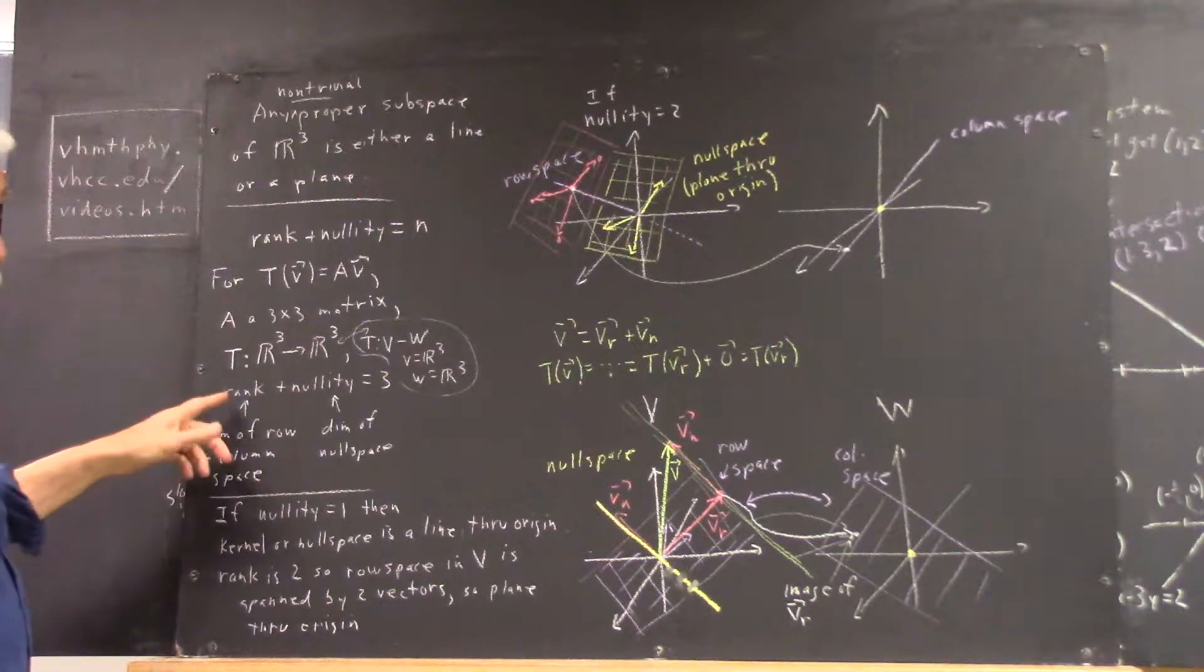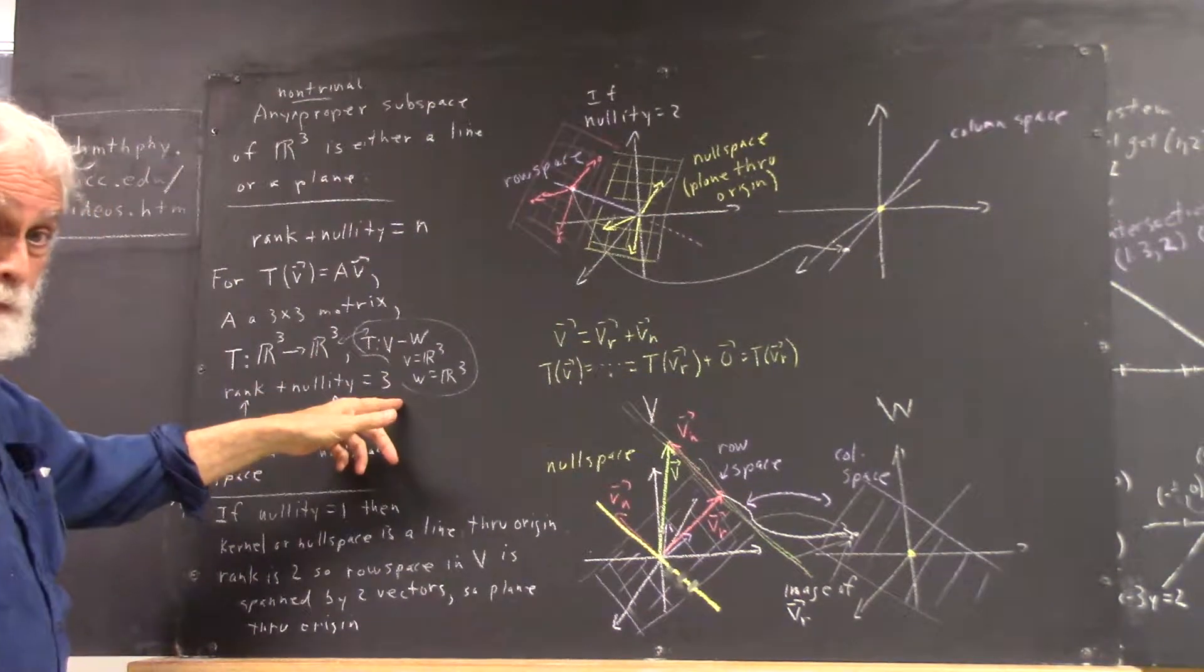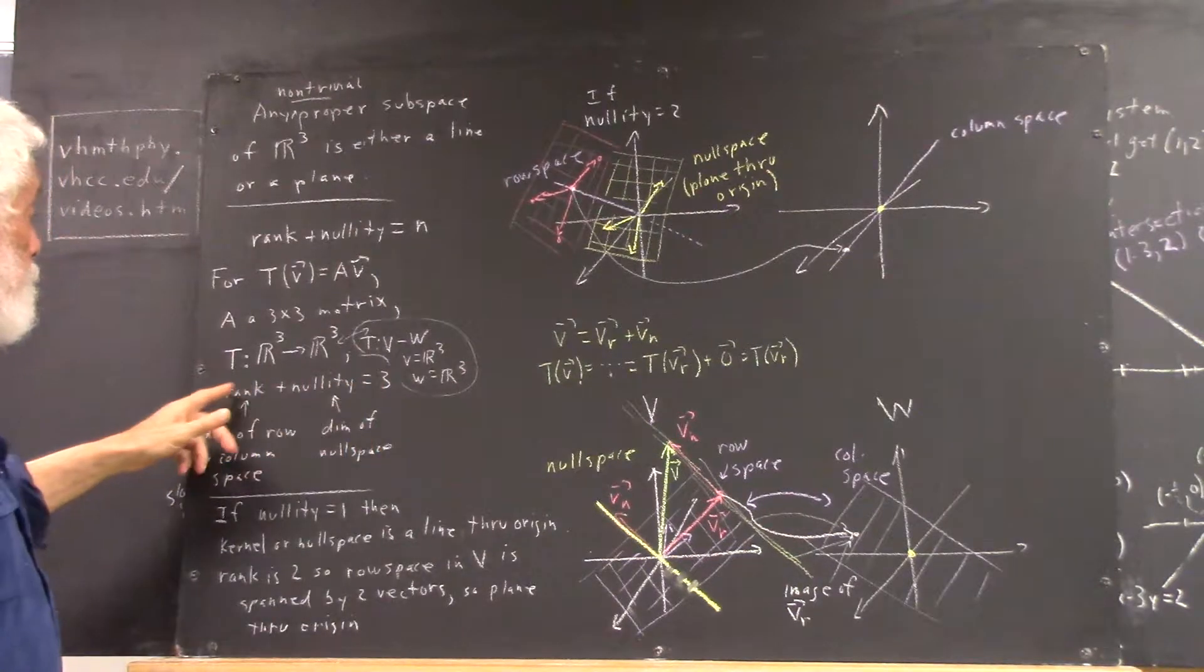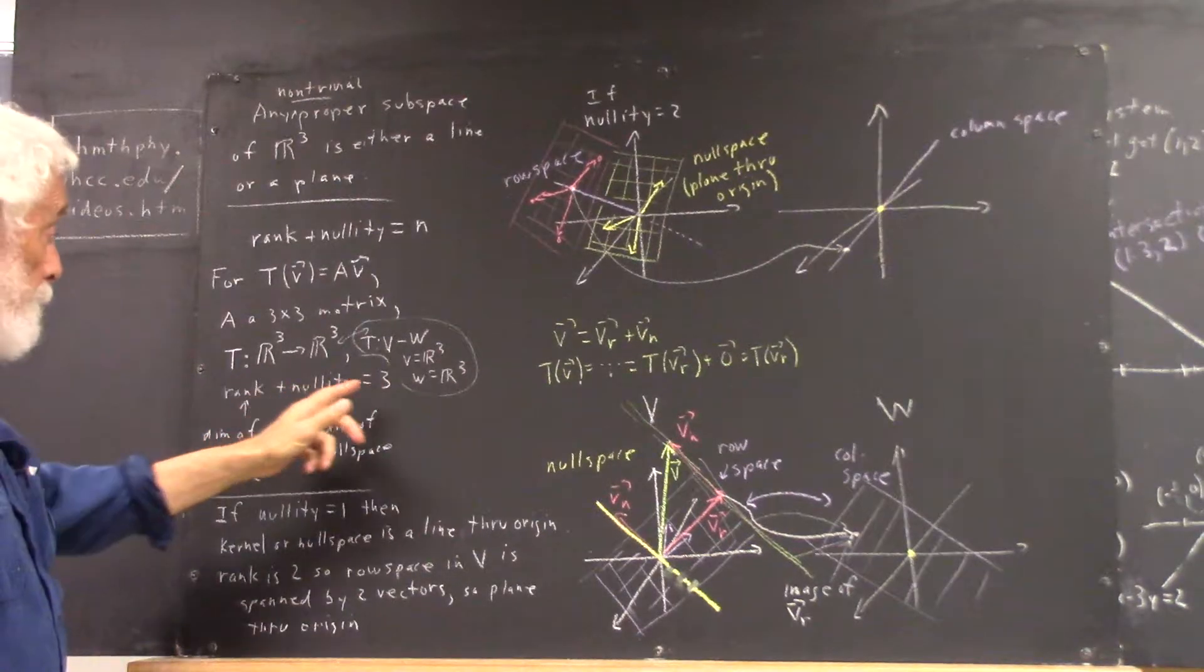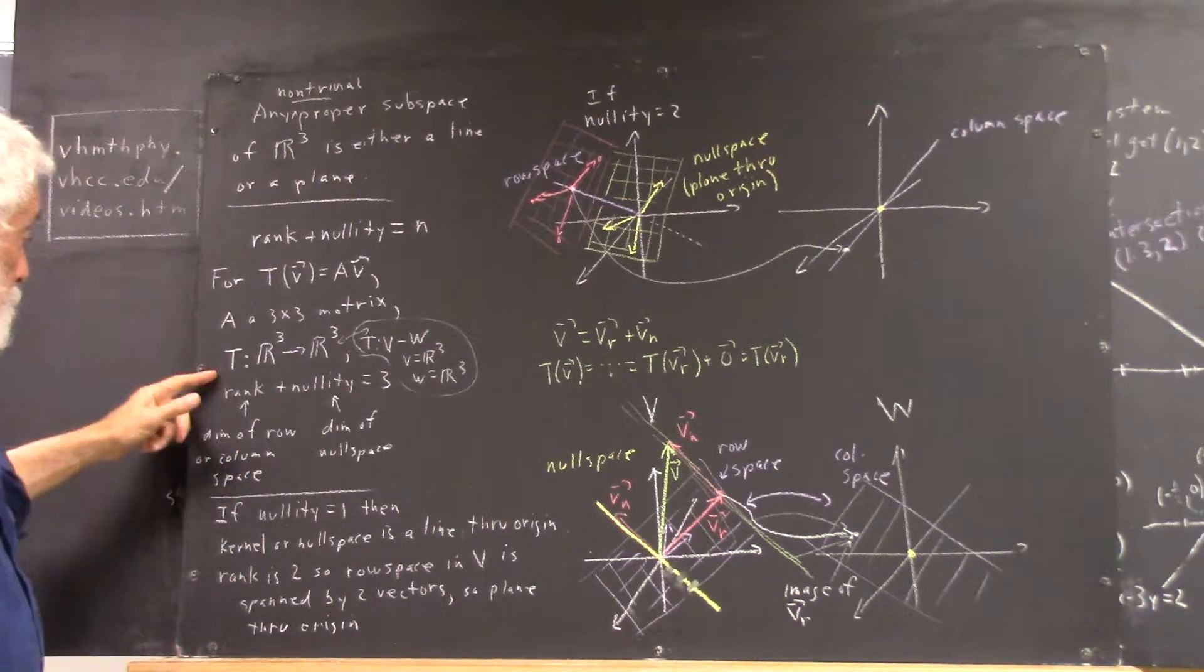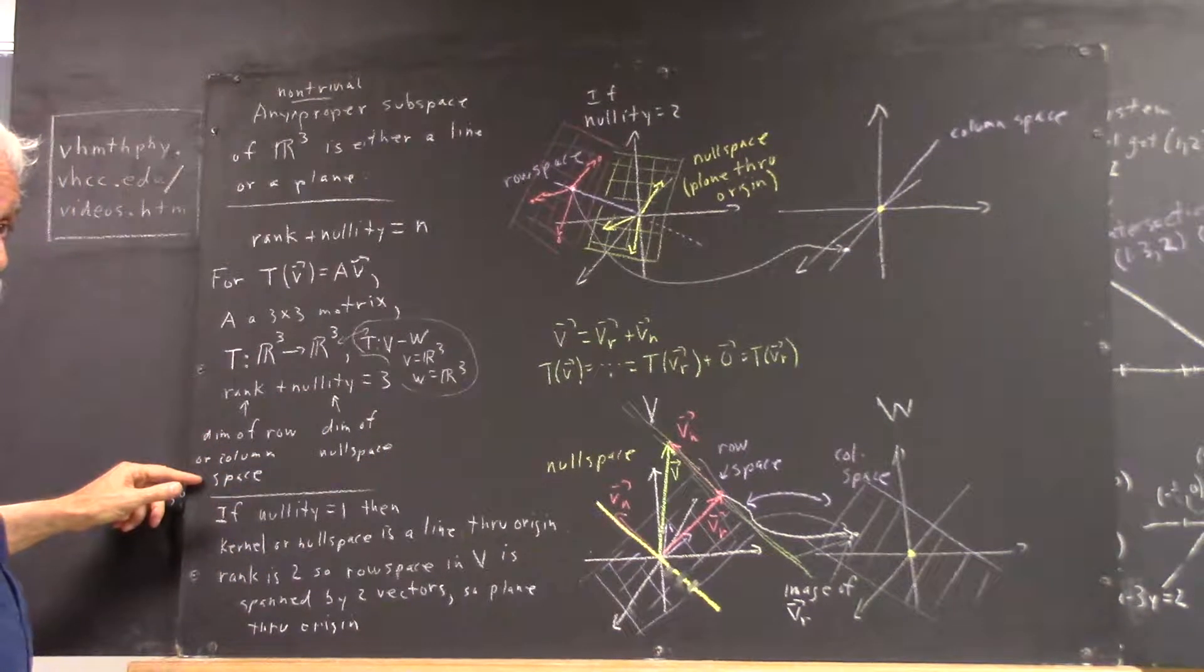We know that the rank plus the nullity of a transformation is equal to the dimension of the space, so in this case the rank plus the nullity has to be 3. Nullity being the dimension of your null space, rank being the dimension of your row or column space.